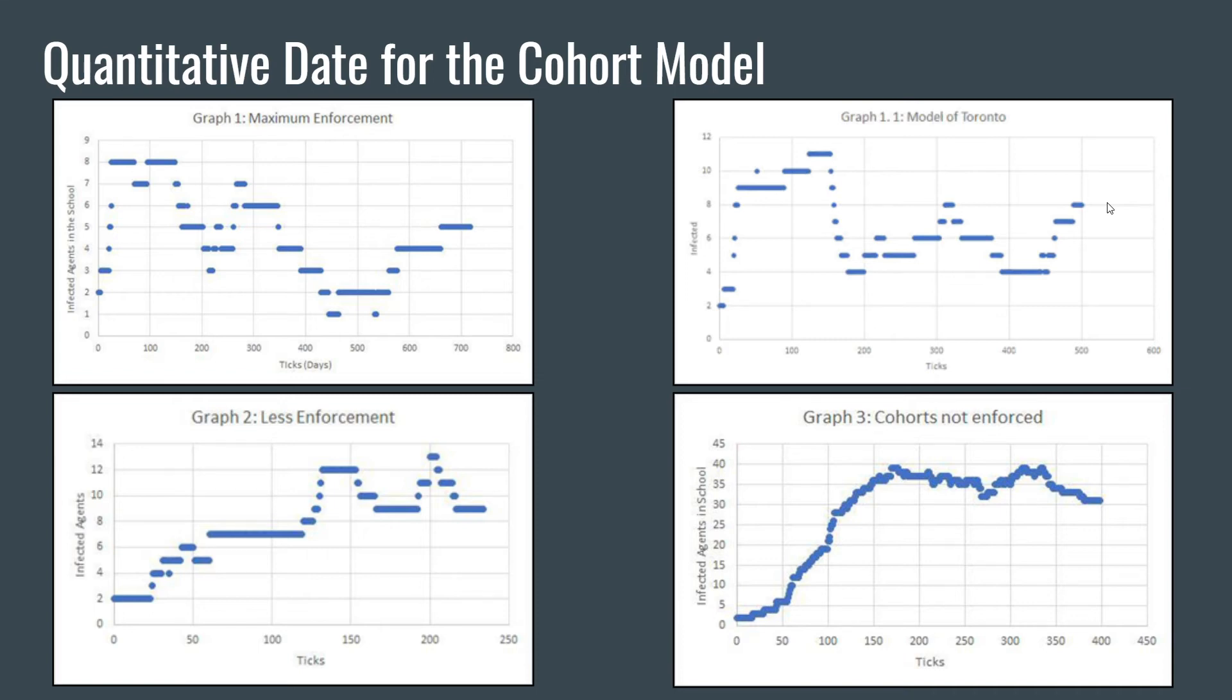The periodicity that we see across all graphs, except for graph 3, comes as a result of teachers moving in between these cohorts and spreading the disease from one cohort to another. If a student in a cohort is to get infected, they will eventually spread to their whole cohort before the cohort goes into quarantine. Thus, there is a large upward trend as soon as an agent gets infected within a cohort, and then this falls down after the cohort goes into quarantine, and eventually these cases are allowed to dissipate.